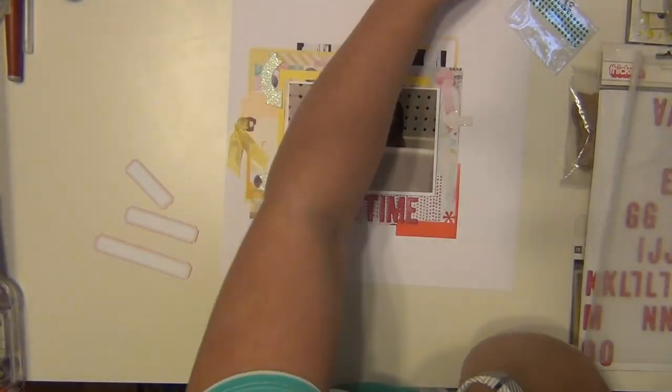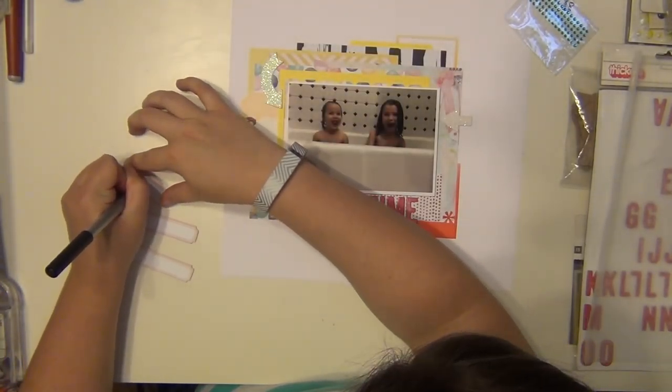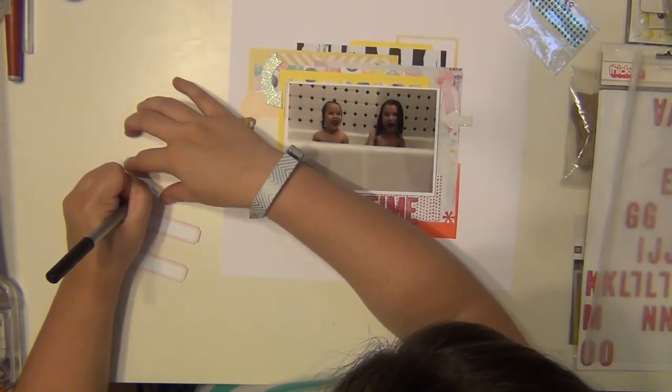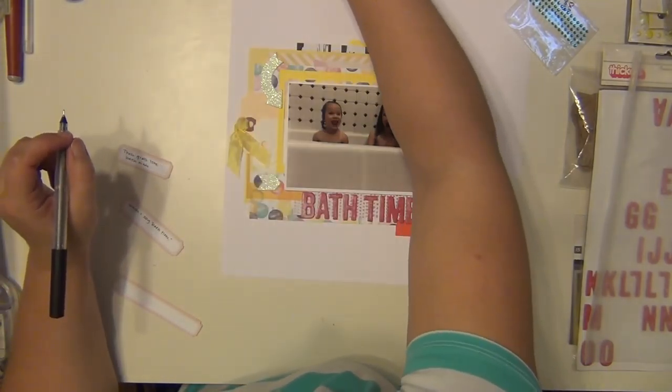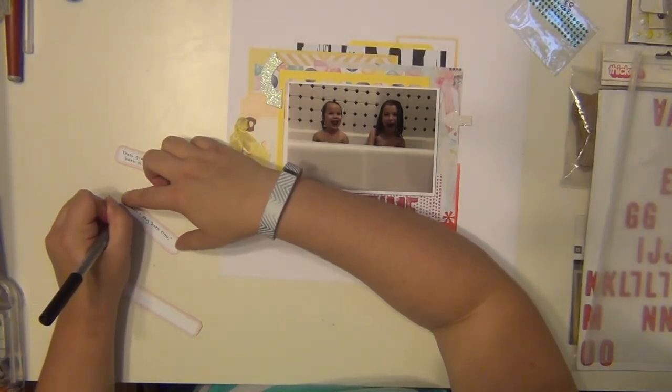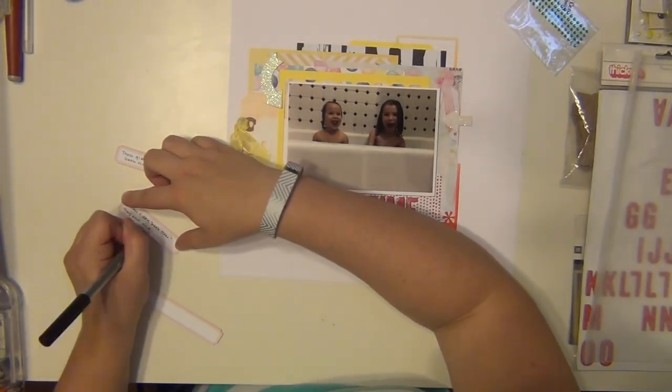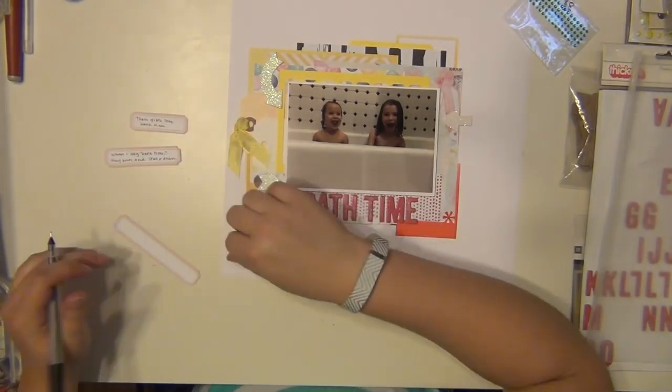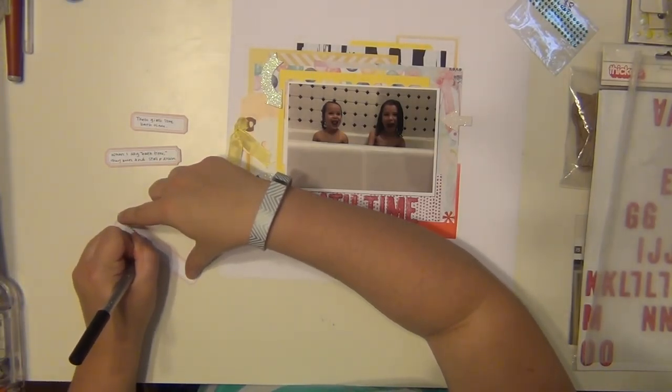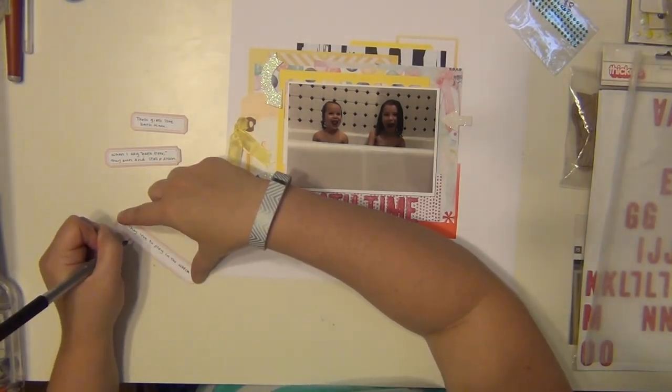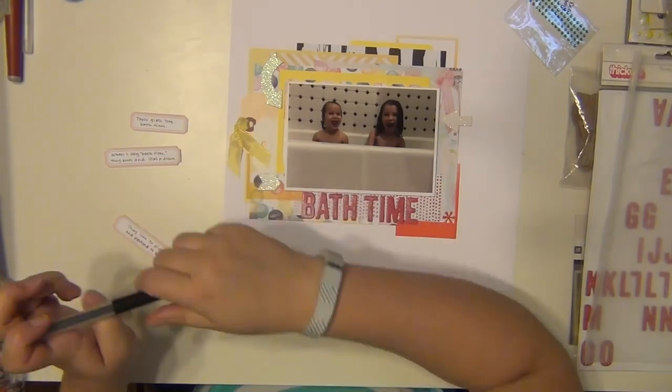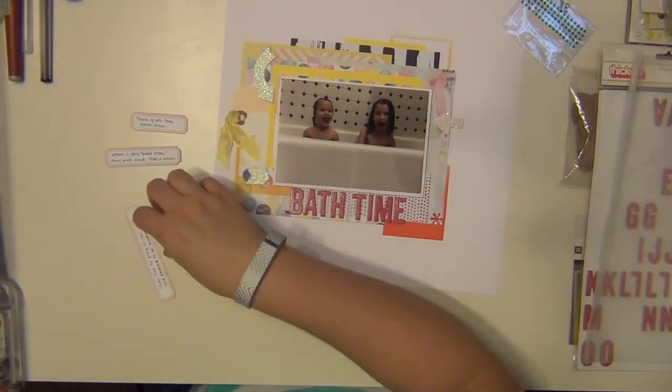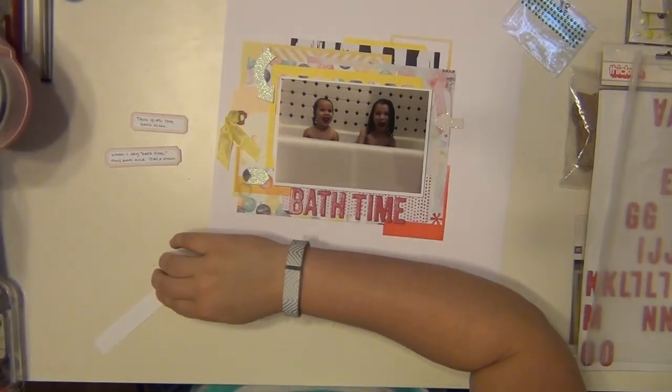I'm going to go ahead and do my journaling on these labels here from Studio Calico. I'm doing it on the labels because my background - you can't see it very well on camera, but my background cardstock there is actually textured. It's the Studio Calico white wood grain cardstock, so writing on it would be impossible. I wouldn't be able to write straight at all because of the texture on it, so I went ahead and used three of these little pink labels for my journaling.